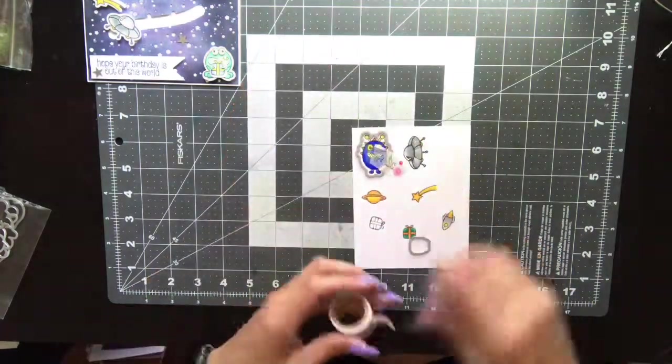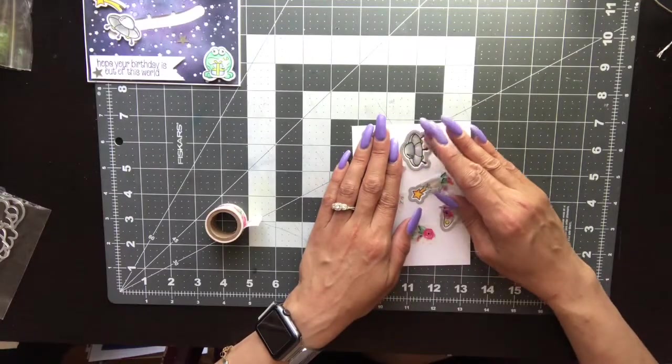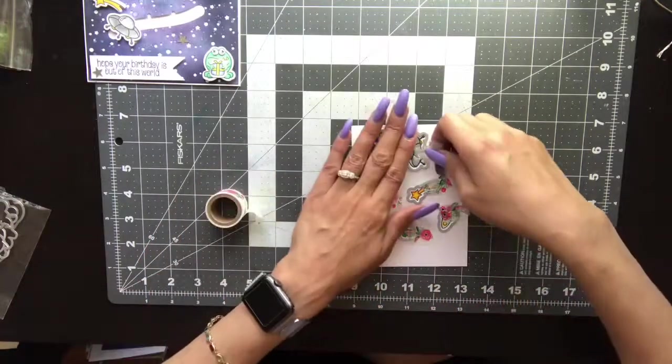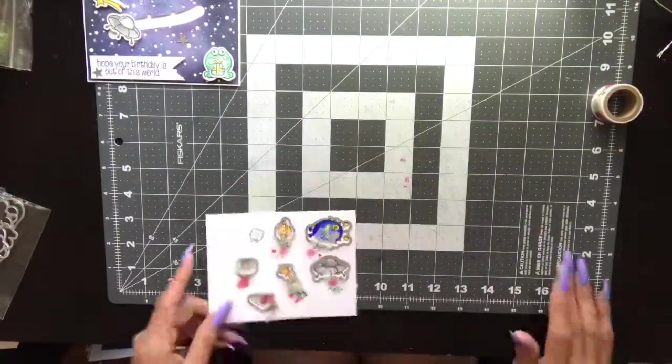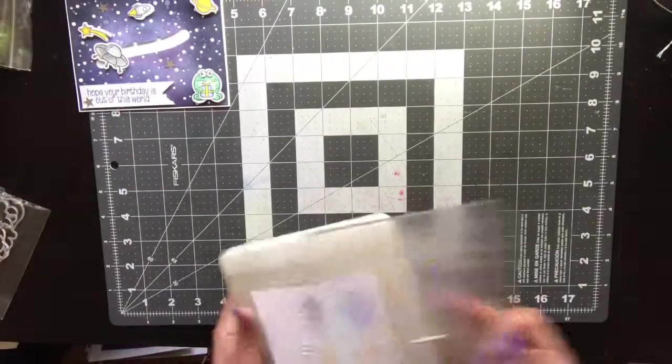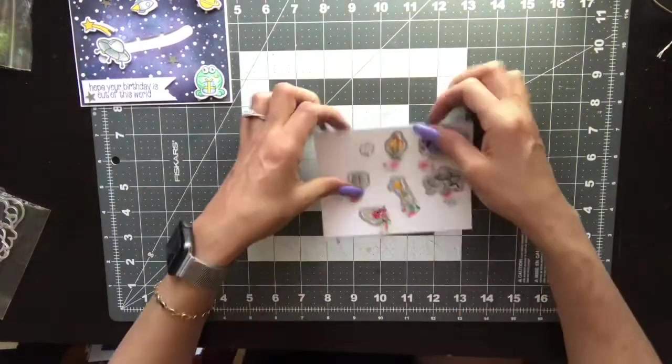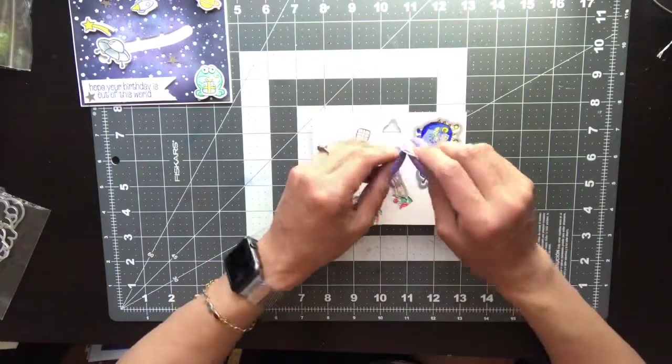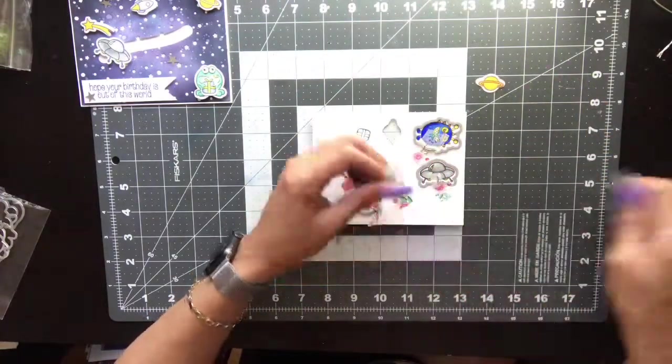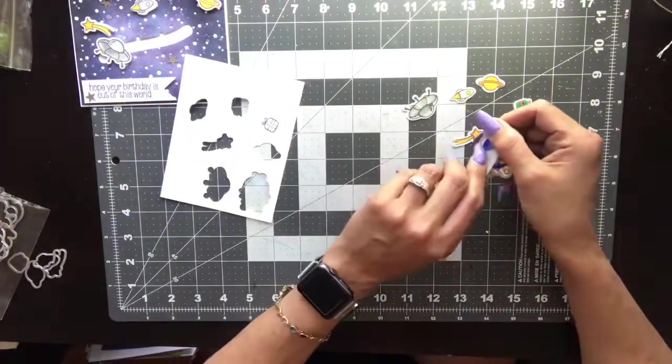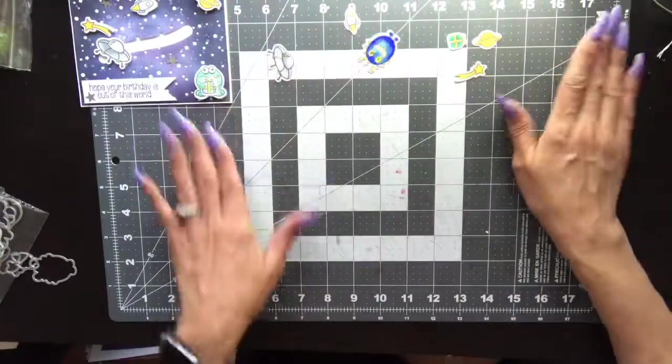Once I finish that I will run it through my Cuttlebug. This is my last image that I am putting the die around. Here we are out of the machine and I'm gonna peel these apart carefully because they are small and you don't want your images to tear. Once I pull all of these out I'm just gonna push them to the side and then we will begin with our background.